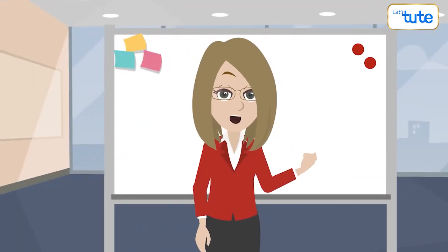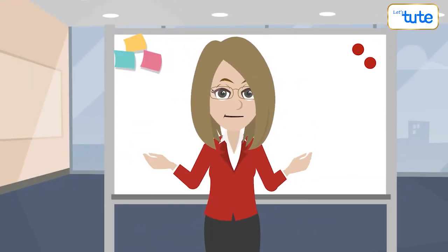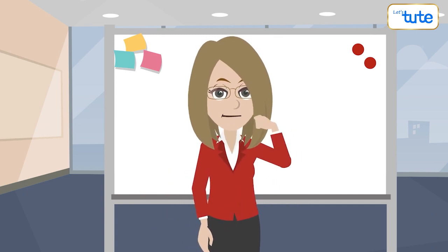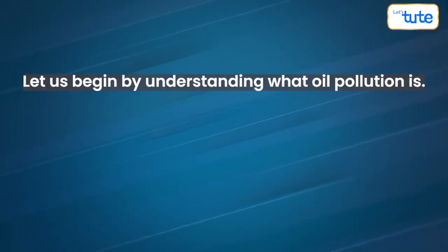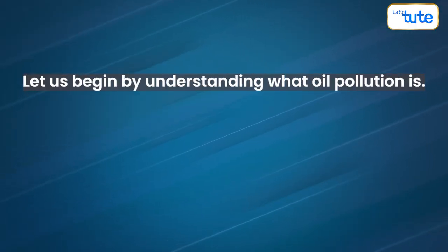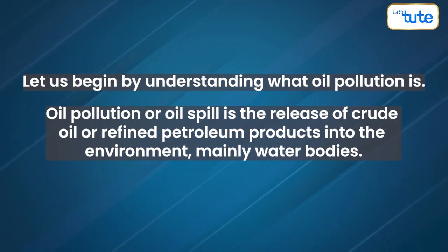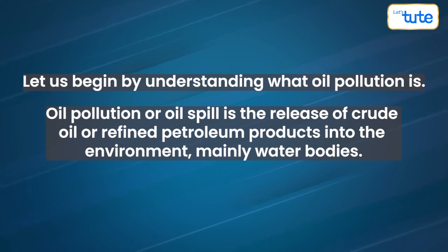Today we will be talking about oil pollution, how it has caused its effects on aquatic life, and most importantly what we can do to prevent it. Let us begin by understanding what oil pollution is. Oil pollution, or oil spill, is the release of crude oil or refined petroleum products into the environment, mainly water bodies.